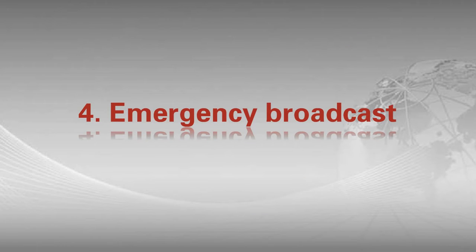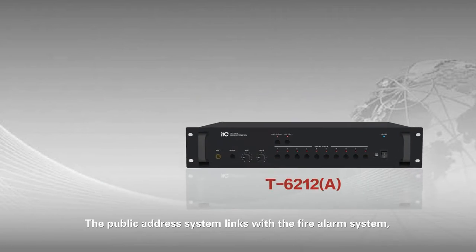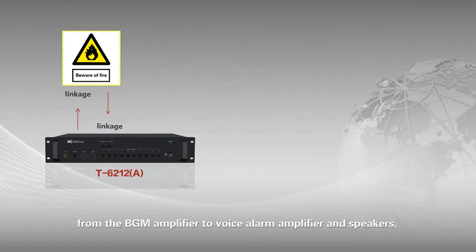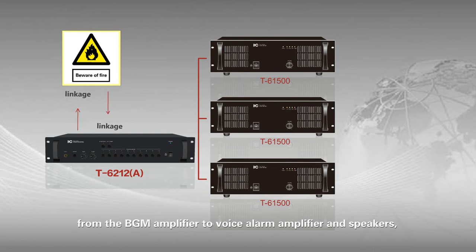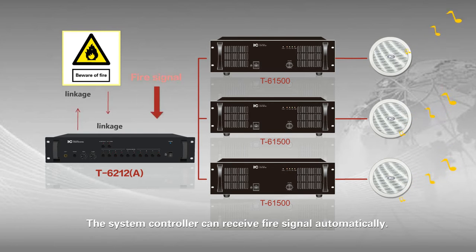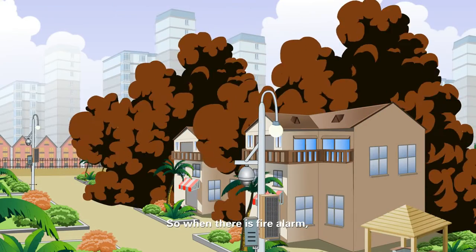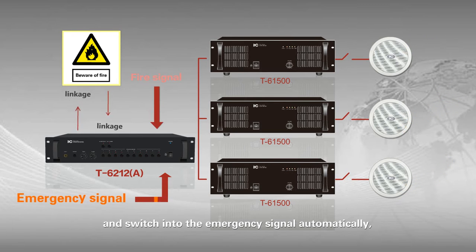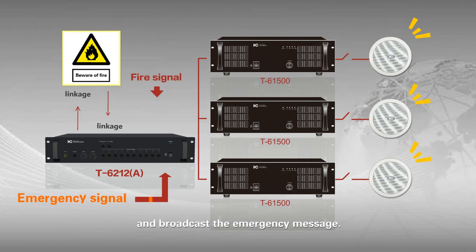4. Emergency broadcast. The public address system links with the fire alarm system, from the BGM amplifier to voice alarm amplifier and speakers, to save resources at maximum. The system controller can receive fire signal automatically. When there is a fire alarm, the public address system BGM signal is cut and switched into the emergency signal automatically, and broadcasts the emergency message.